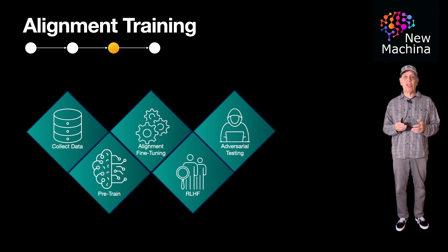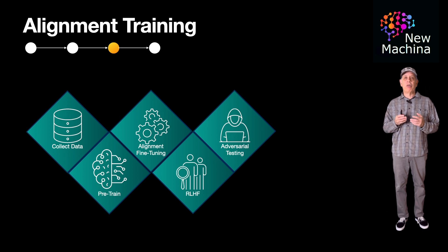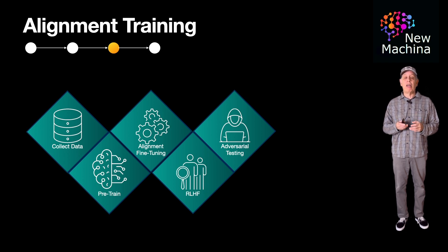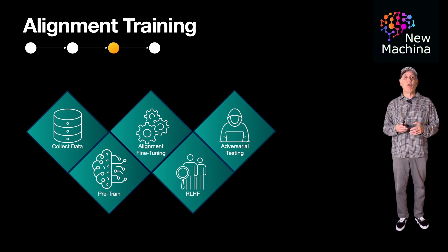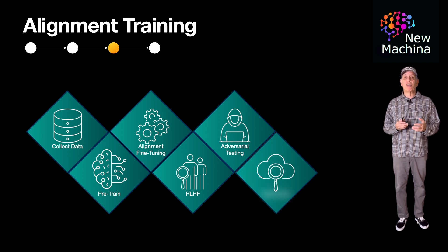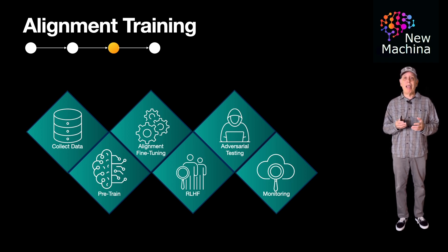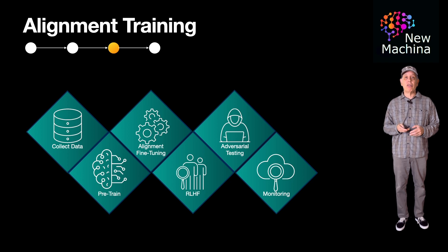Next, engineers perform adversarial testing on the LLM. The goal in this step is to identify potential vulnerabilities and edge cases where the LLM might fail to align with human values. Lastly in the lifecycle, the LLM is deployed into production with continuous monitoring. Continuous monitoring helps to ensure alignment after deployment, as real-world usage can reveal new alignment challenges.